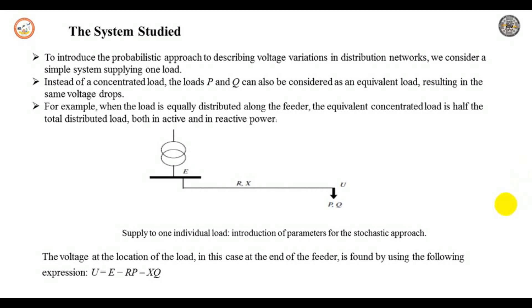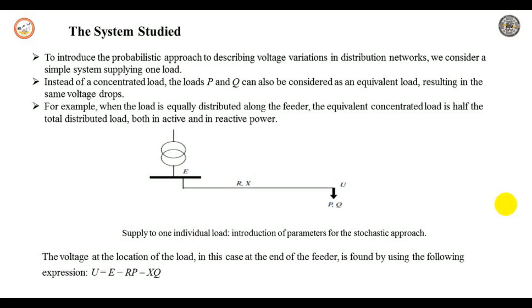Introduction to the probabilistic approach: this describes the voltage variation in a distributed network. We will consider a simple system supplying only one load shown in the figure. Instead of concentrating on a single load, the load P and Q can also be considered as an equivalent load which results in the same voltage drop. For example, when the load is equally distributed along the feeder, the equivalent concentrated load is half the total distributed load.